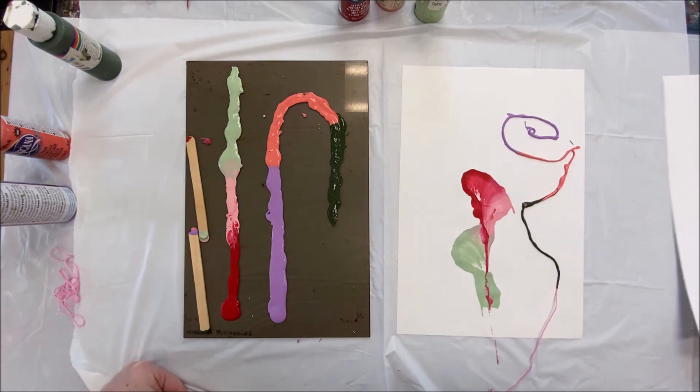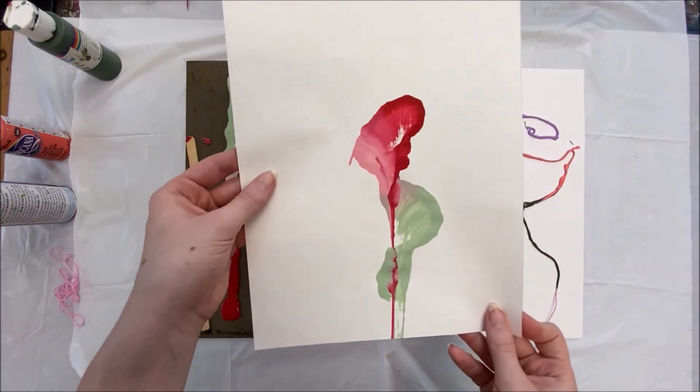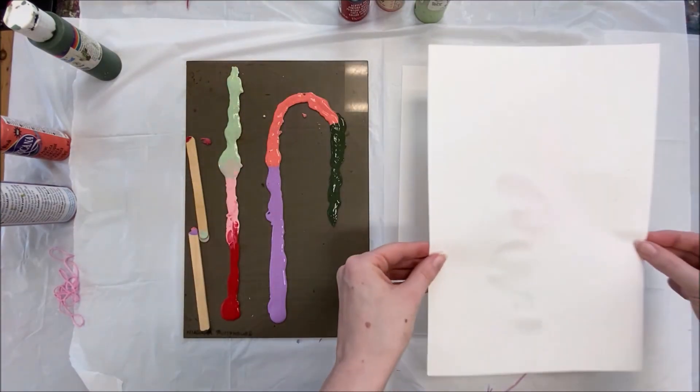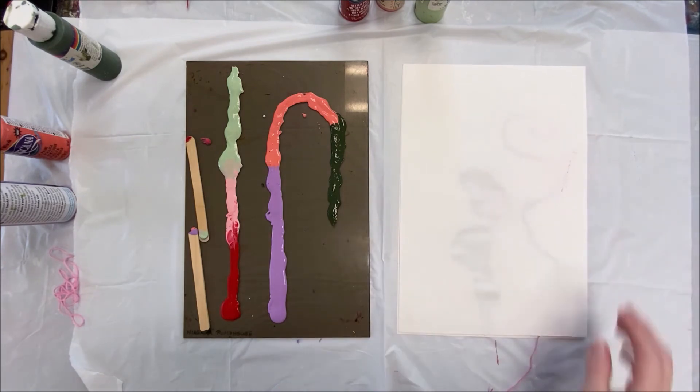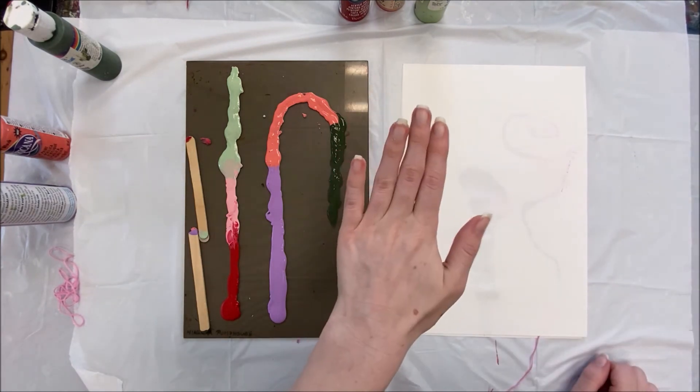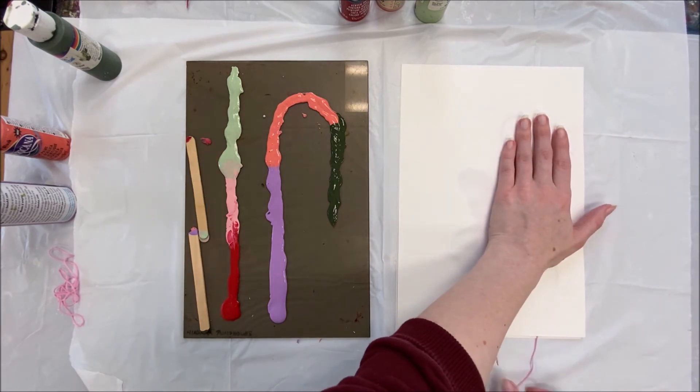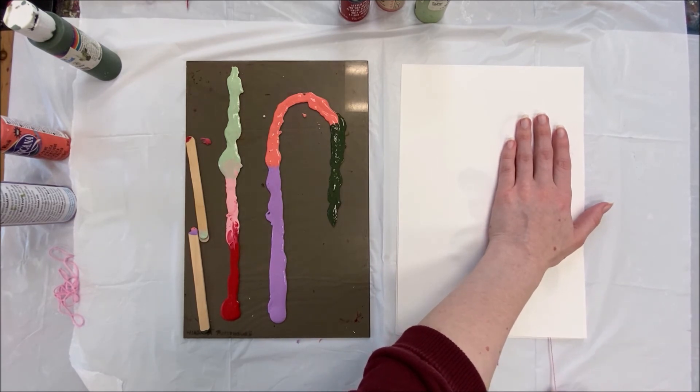Now take your top sheet, flip it over, and sandwich your string between the two pieces. Again, we're going to take our hand, lay it on top of the string, and take the clean end. Gently pull all the way out.